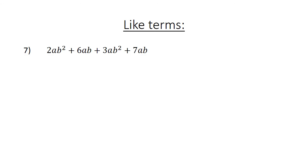Like terms: 2ab squared plus 6ab plus 3ab squared plus 7ab. Combining: 2ab squared plus 3ab squared equals 5ab squared, and 6ab plus 7ab equals 13ab.